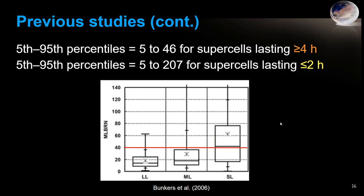In 2006, I did research with forecasters here at Rapid City looking at supercell longevity: long-lived supercells lasting at least four hours, short-lived lasting two hours or less, and moderate-lived in between. Long-lived supercells had a very compressed range of bulk Richardson number — in that very balanced state between buoyancy and shear. Moderate-lived supercells were still mostly below BRN 40, while short-lived supercells had several with much higher BRNs. This is consistent with the BRN applying not only to forecasting supercells but also to their steadiness and longevity.